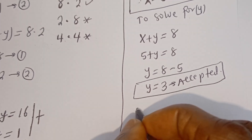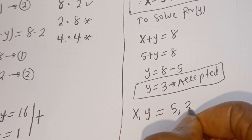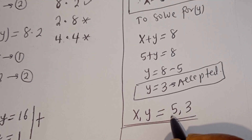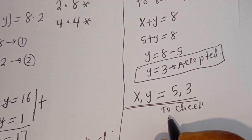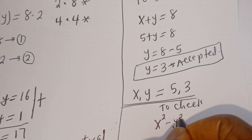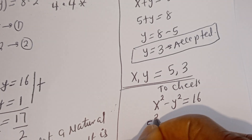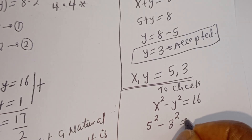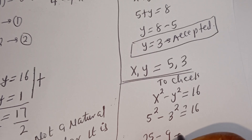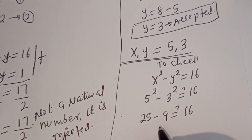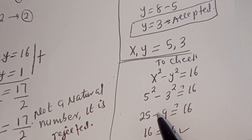Therefore our final answer is (x, y) = (5, 3). Let's check: x squared minus y squared equals 16; substituting gives 5 squared minus 3 squared, which is 25 minus 9, and 25 minus 9 equals 16 — which is true.